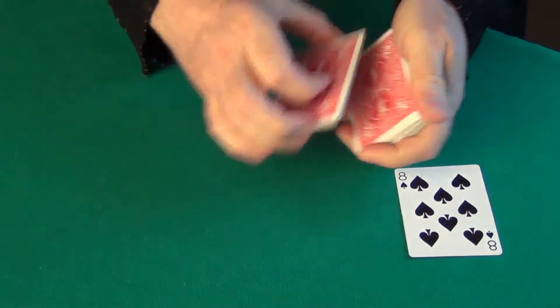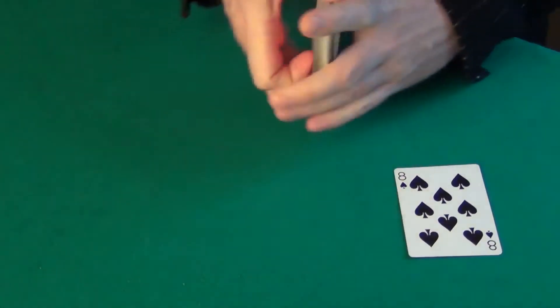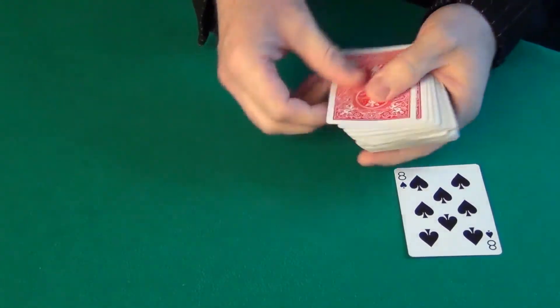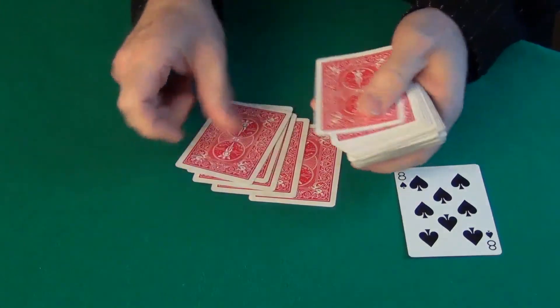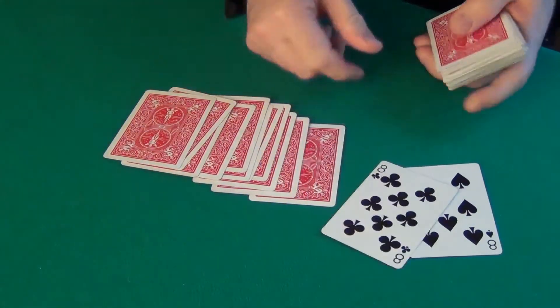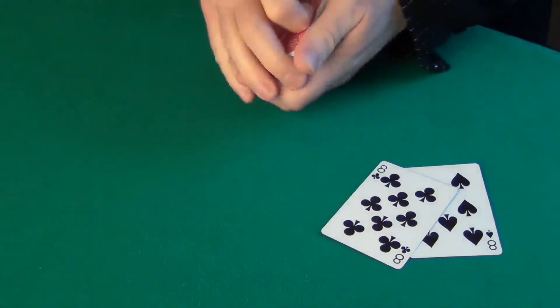So if we just cut the cards one more time, and then we spell E-I-G-H-T-O-F-C-L-U-B-S, we get the Eight of Clubs.